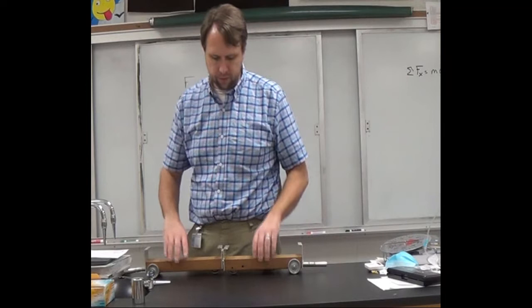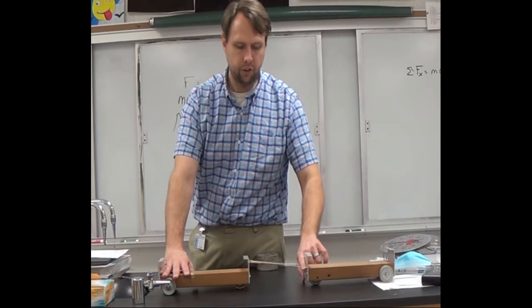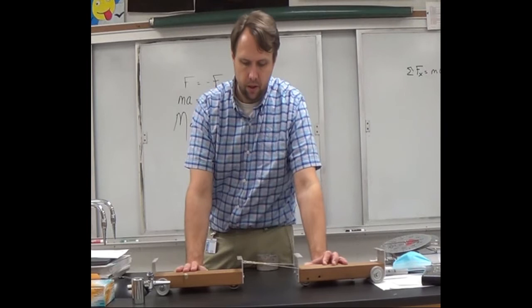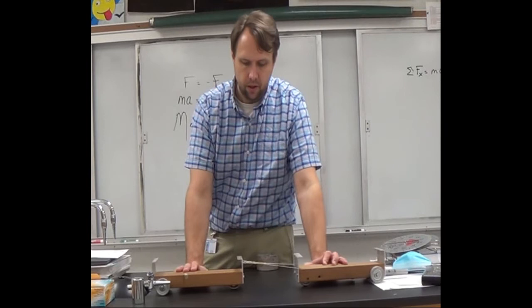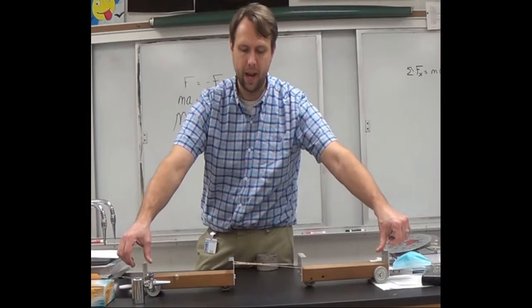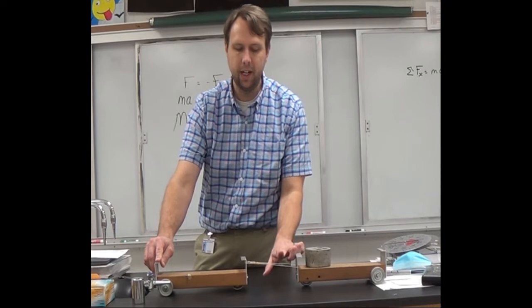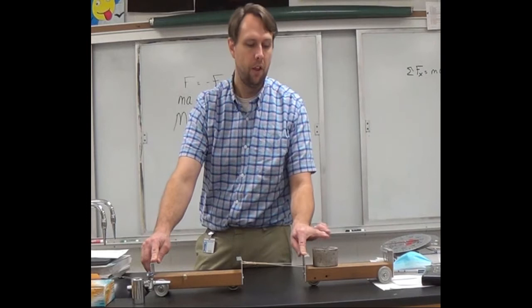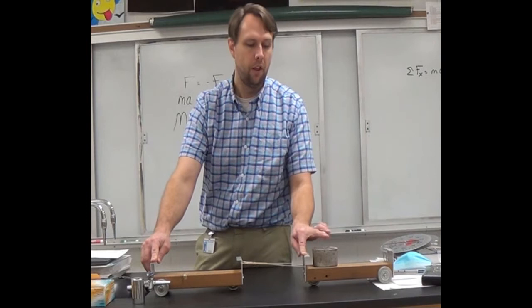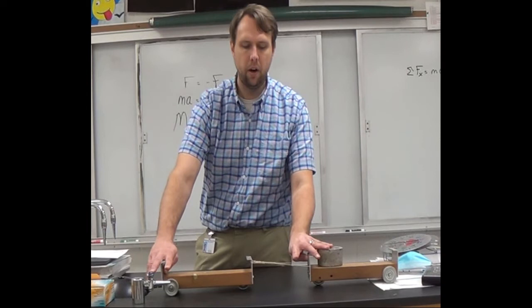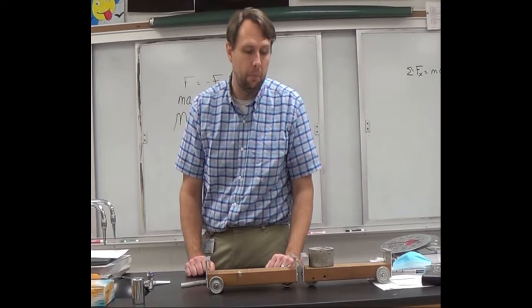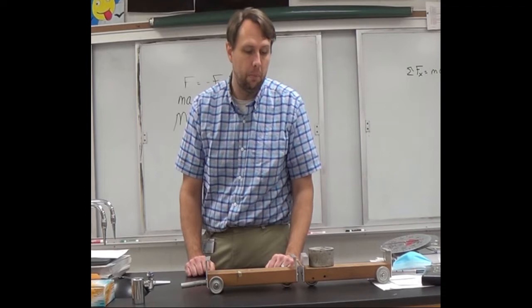Here we have two carts with a rubber band connecting them, putting a force on both. The force exerted by the rubber band is the same on both carts. With equal mass they have the same acceleration, so they meet at the center. If one cart has three times the mass of the other, the center of mass shifts, the lighter cart has a bigger acceleration, and they meet at that offset point. The cart with less mass had a bigger acceleration; with bigger mass you have smaller acceleration.